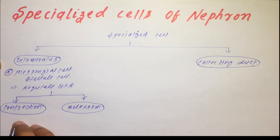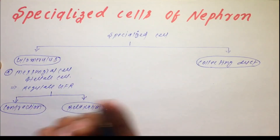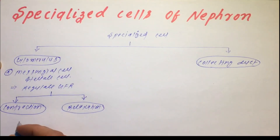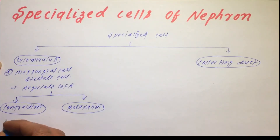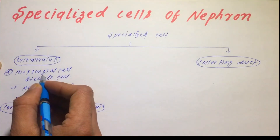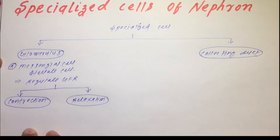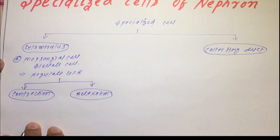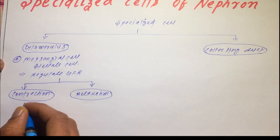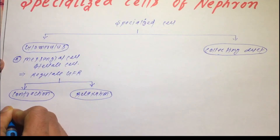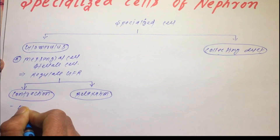This contraction and relaxation of the mesangial cell is mediated by specific mediators. We should remember the names of these mediators because this type of question comes in the MCI exam and also in PG exams. For the contraction of the mesangial cell, there is endothelin — just remember this name.